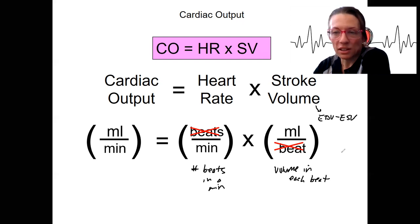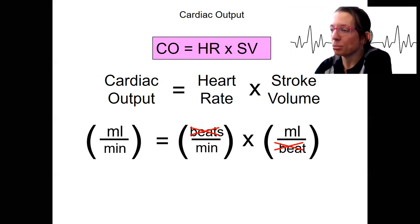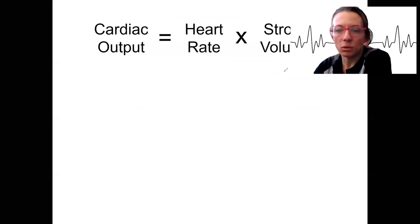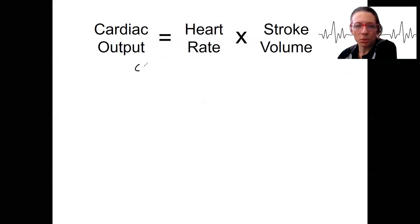We're going to look at the factors that influence cardiac output. But first, let's make sure you can calculate cardiac output with an example. Remember, this is our formula: cardiac output equals heart rate times stroke volume. What are some normal values for these two things?